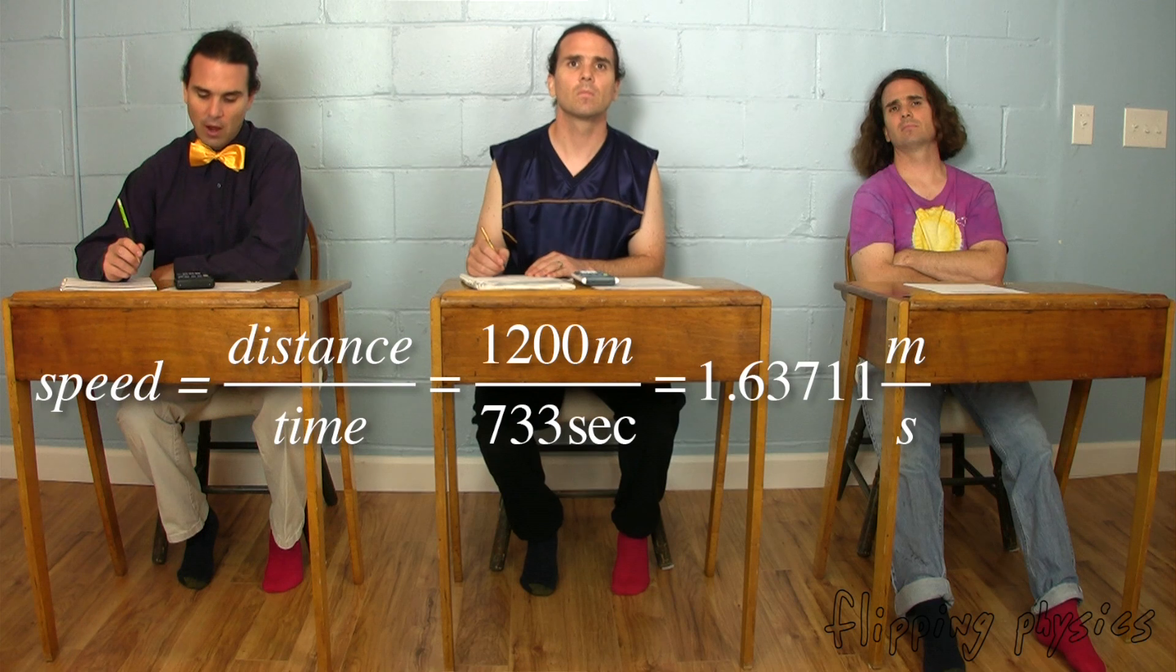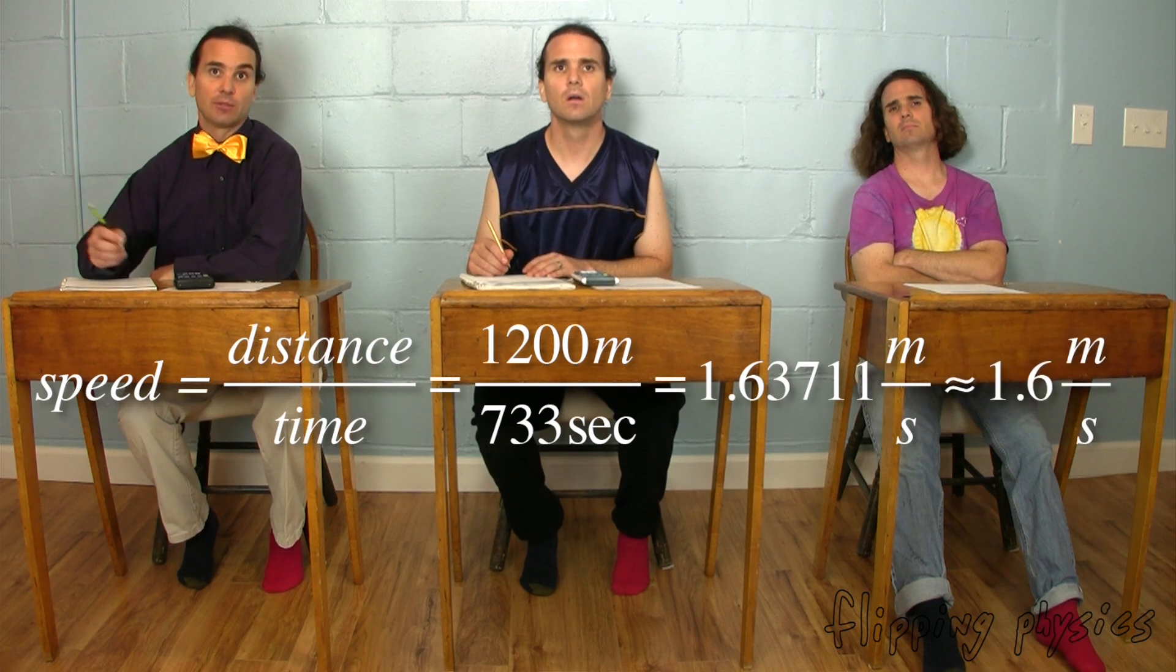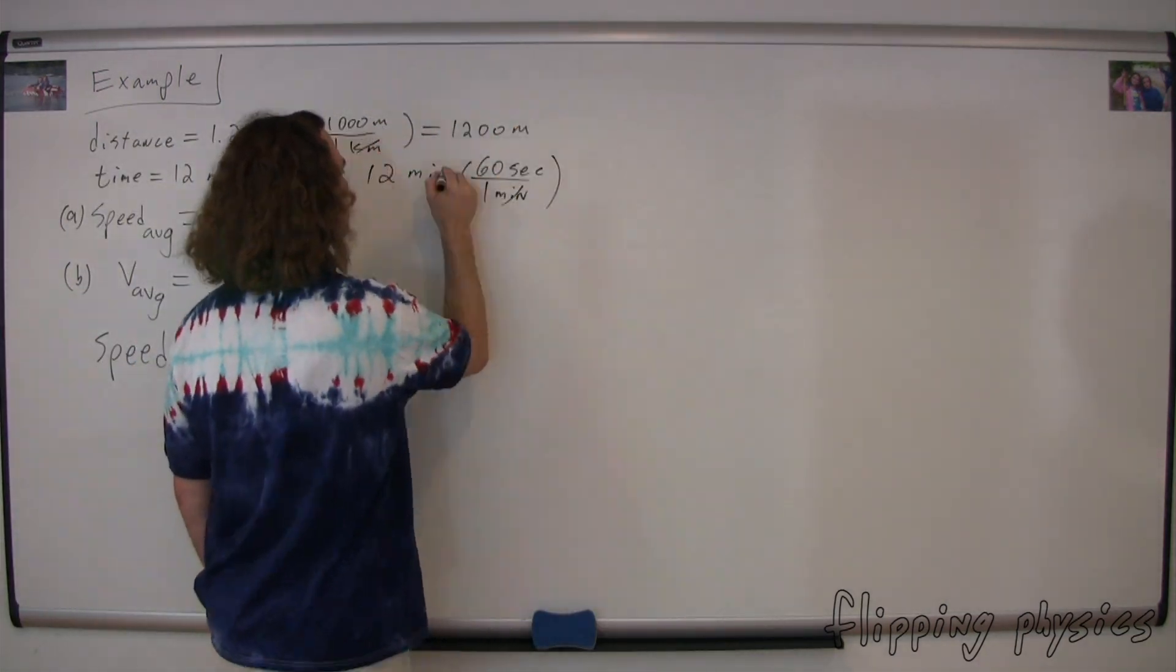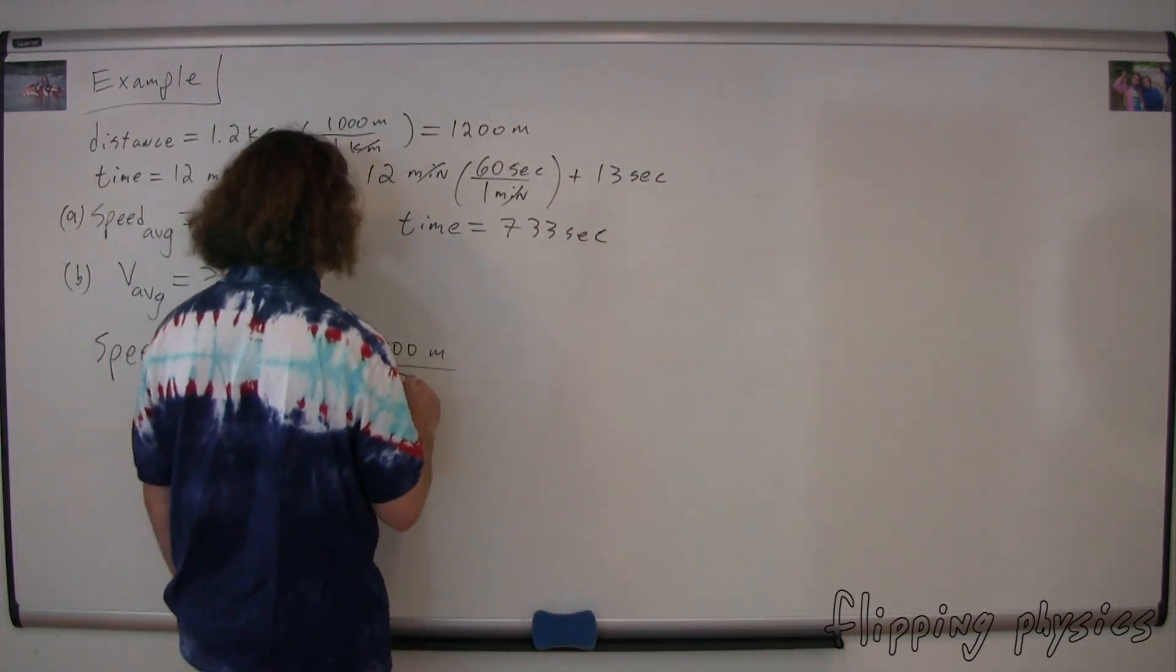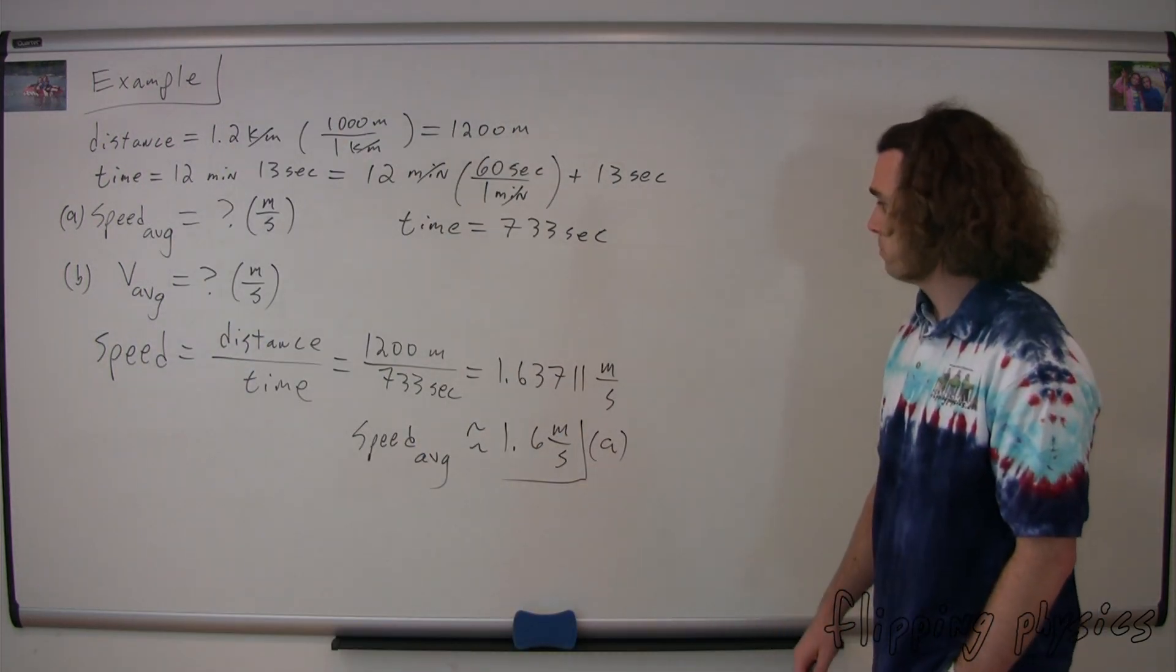And that rounds to two sig figs, 1.6 meters per second with two sig figs. Very nice, Billy. That is the average speed.